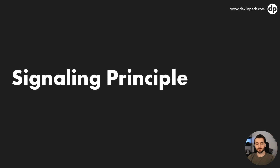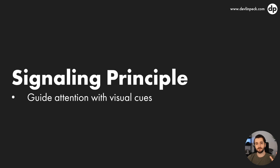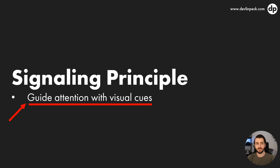The Signaling Principle says to guide attention with visual cues — highlighting things, underlining them, adding an arrow pointing to something, zooming in, or having a glow around an element. It's fairly self-explanatory: you want to add these little cues to direct people's attention to whatever it is they should be paying attention to.